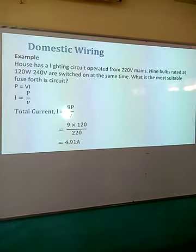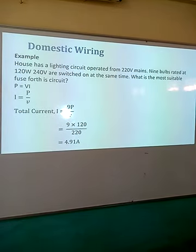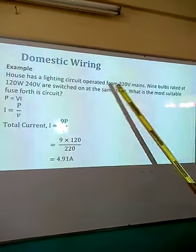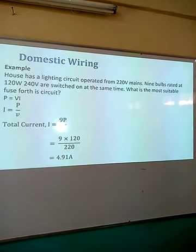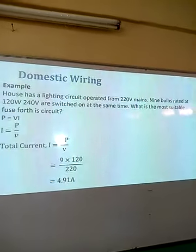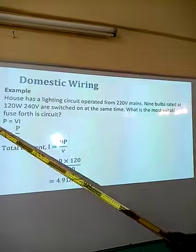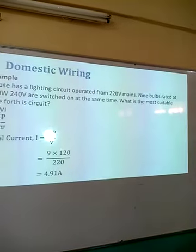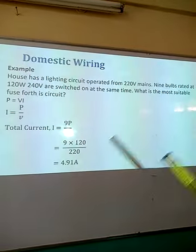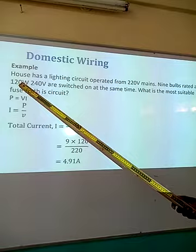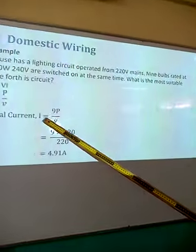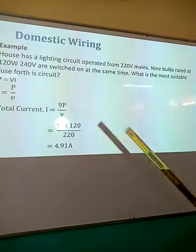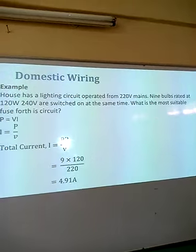Example: a house has a lighting circuit operated from 220 volts mains, with nine bulbs rated at 120 watts, 240 volts, switched on all at the same time. What is the most suitable fuse for the circuit? Using the formula: Power equals voltage times current, so current equals power divided by voltage. Substituting: I equals 9P over V. We have the current in the circuit as 4.91 amperes.